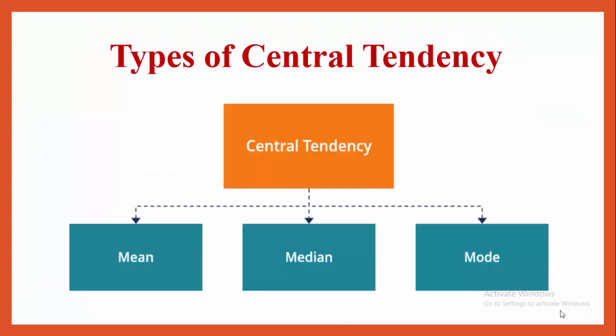Types of central tendency: there are three types of measures in central tendency. First, mean; second, median; and third, mode. We will see each measure in detail.